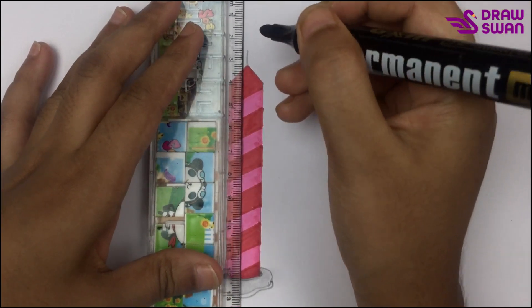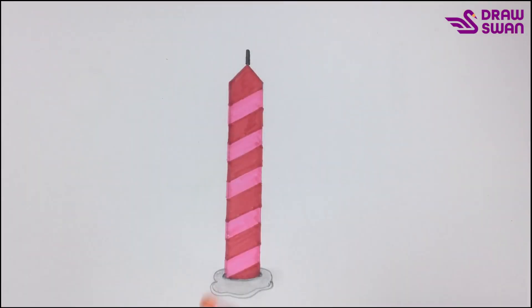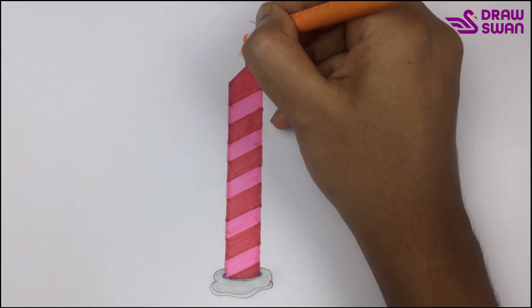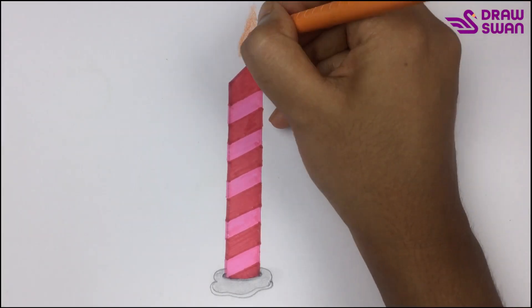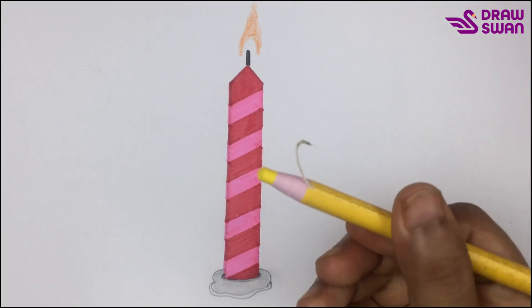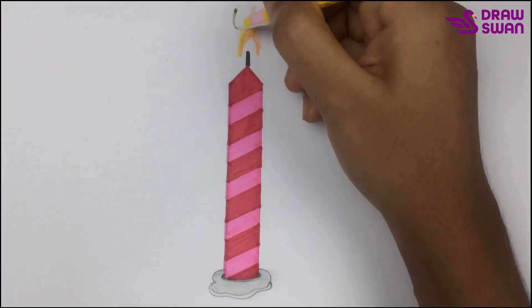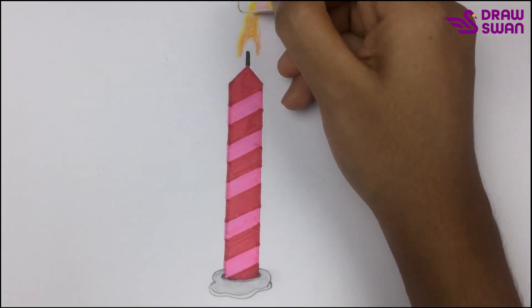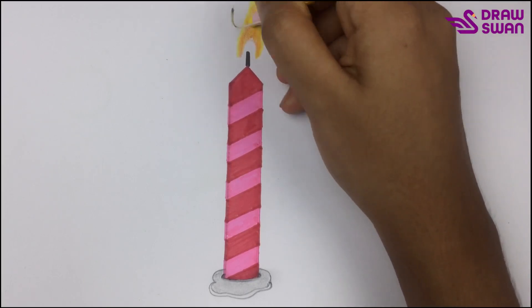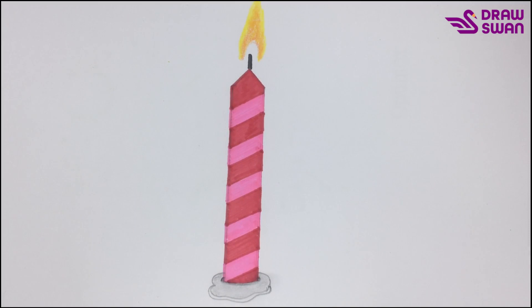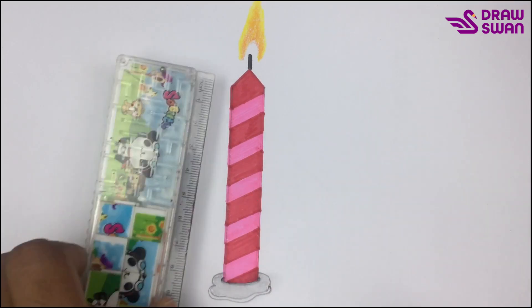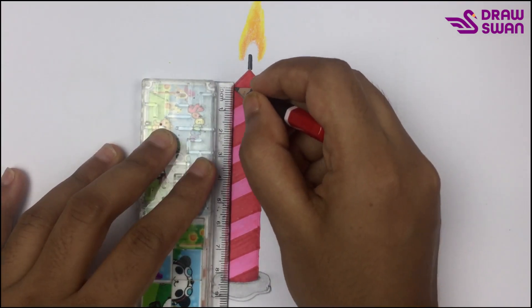I'm using my black marker pen. For the fire, I'm using orange pencil. And now I'm using yellow pencil. I'm using my pencil again.